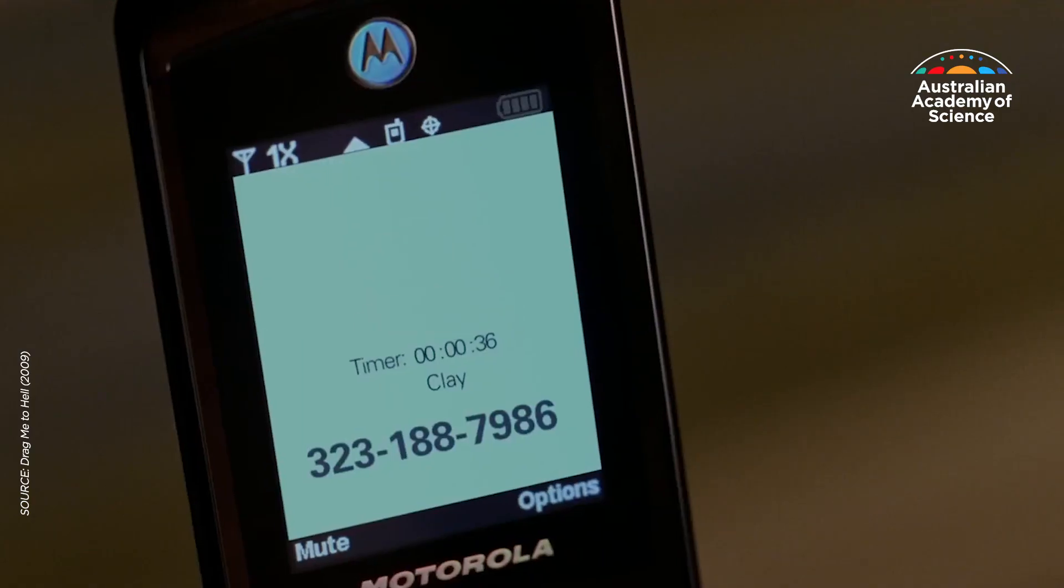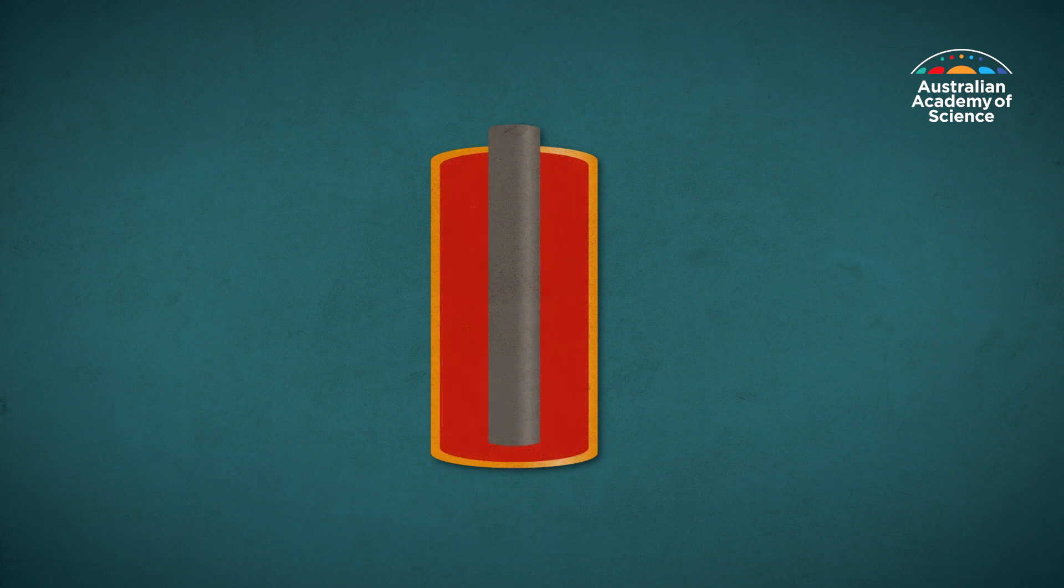Have you ever wondered why your phone's batteries perform worse over time? Inside every battery are two electrodes, the anode and the cathode, and the electrolyte which separates them.